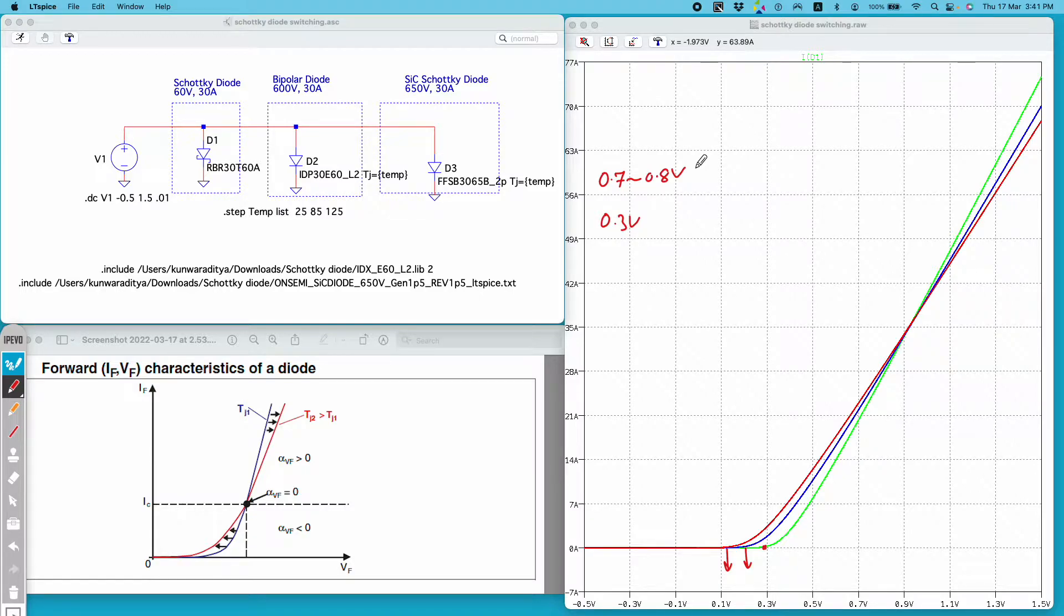Also they are not available in high voltage rating. Mostly I have seen this diode in the maximum rating of 200 volt unless you go for silicon carbide Schottky diode. If you go for silicon carbide technology you have Schottky diode available in 600 volt, 1200 volt rating, but conventional Schottky diode they are available up to 200 volt.